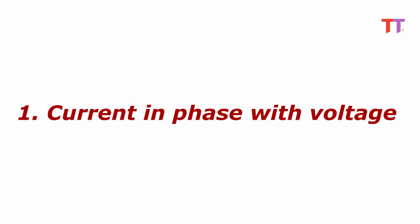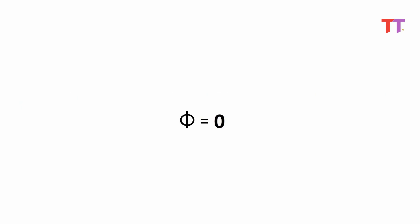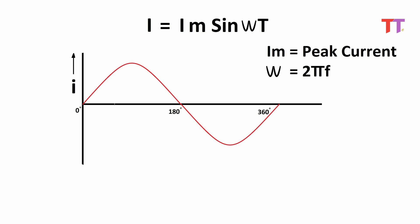Case one: current in phase with voltage. This means the phase difference between voltage and current is zero — phi is zero. Hence the current equation is i equals Im sin omega t, a similar equation and phasor diagram as that of voltage, where Im is the peak value of current, omega equals 2 pi f, f is frequency, and t is time.